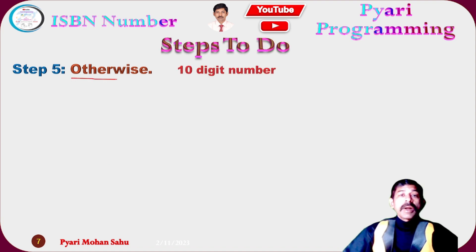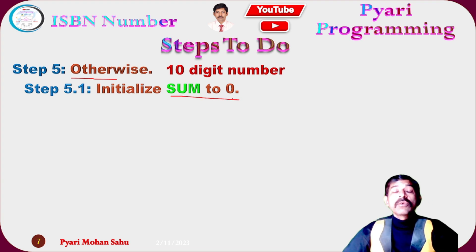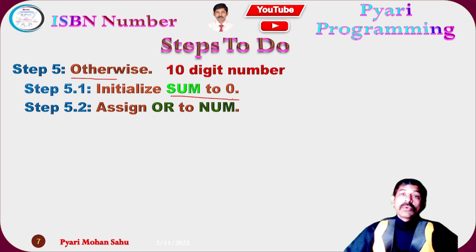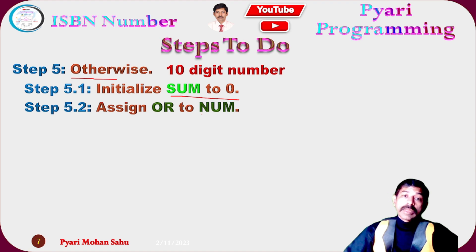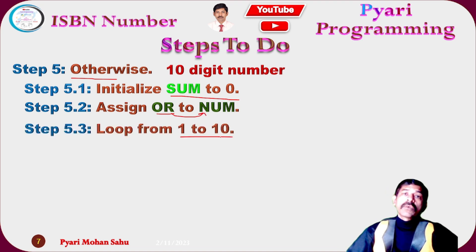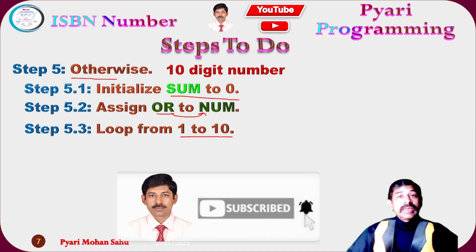If it is a 10-digit number, initialize a variable 'sum' to zero to calculate the weighted digit sum. To extract each digit we need the original number, so assign the backup value back to 'num'. Then iterate from 1 to 10, since we need to process all 10 digits.